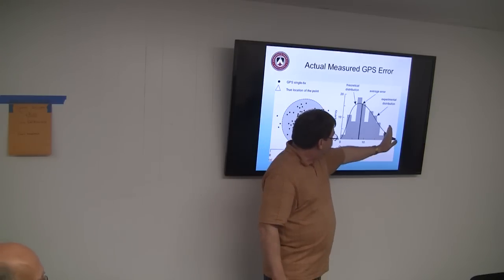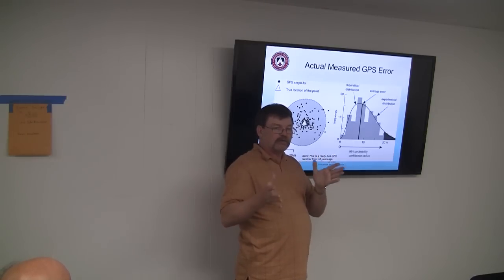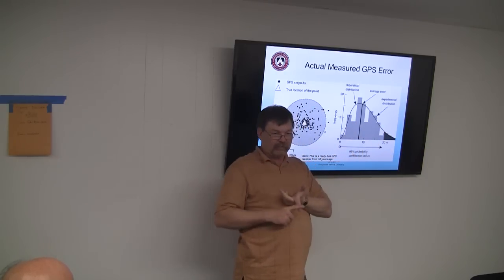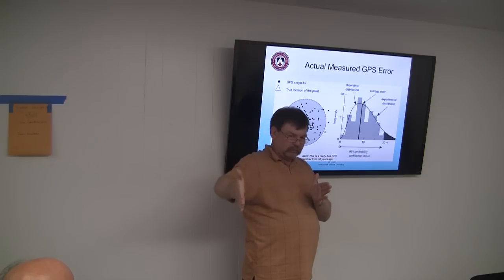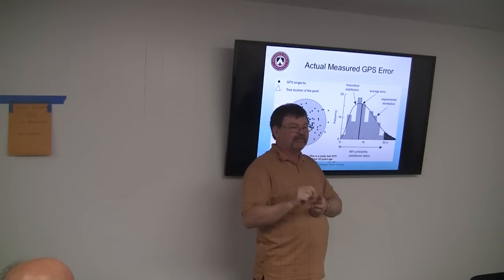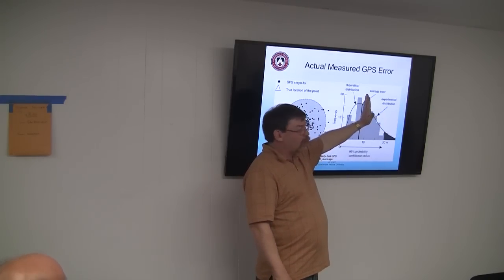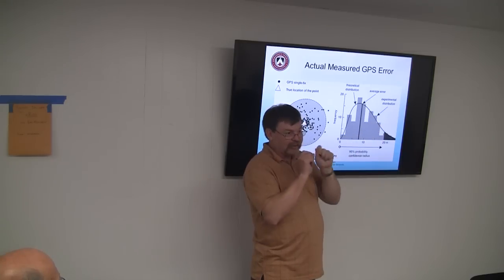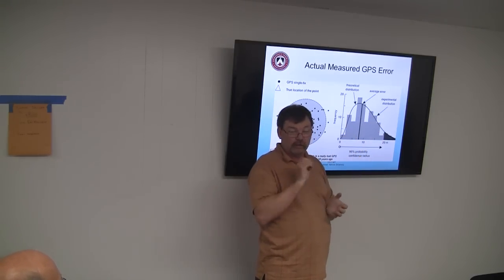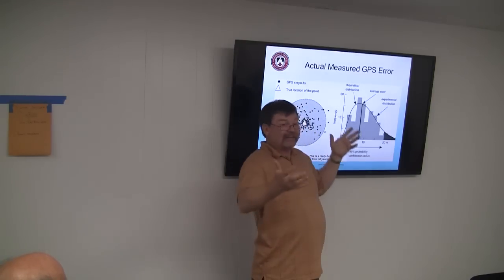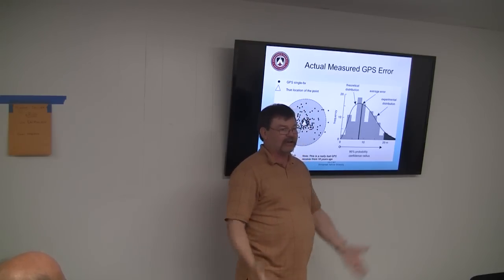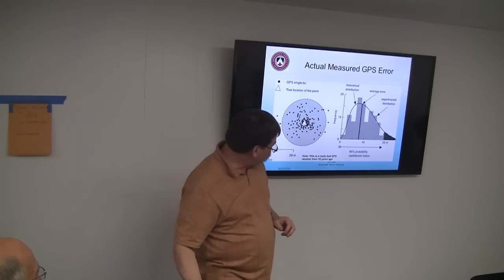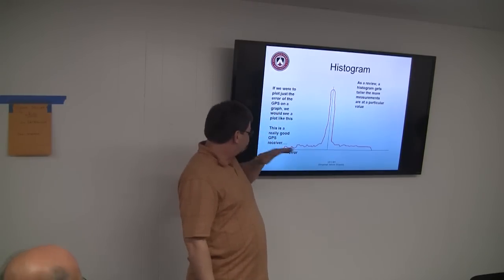When someone tells you it's a three-meter or two-meter GPS, they're telling you where the probability curve hits either the 95% or the 50% rate. The published spec for most GPS units is the 50% number — believe it or not. Half the time it's worse than the stated figure. You have to look in the specs to figure out which number they're giving you.